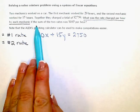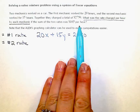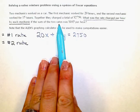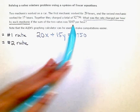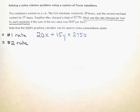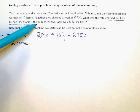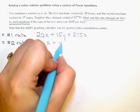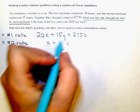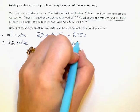My second equation is going to come from this last part. The sum of the two rates was $165. So x and y represent my two rates. Their sum, or x and y added together, total $165.